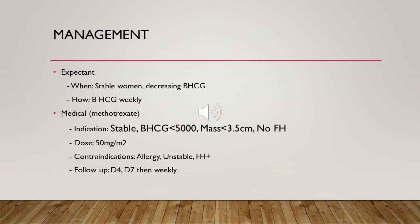Management of ectopic pregnancy: there are three lines of management for tubal ectopic pregnancy — expectant, medical, and surgical. For expectant management, the patient should be clinically stable, pain-free, with a mass less than 35 mm with no visible fetal heart on transvaginal scan, and beta-hCG less than 1000. We can consider expectant management if beta-hCG is between 1000 and 1500 and the patient is able to return for follow-up. Beta-hCG should be repeated on day two, day four, and day seven, with a persistent drop required. There is no need to give anti-D for expectant management.